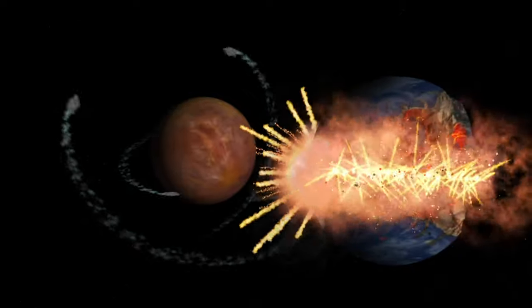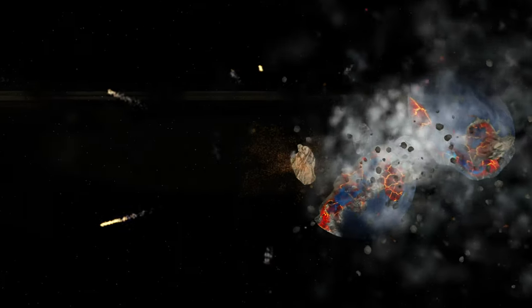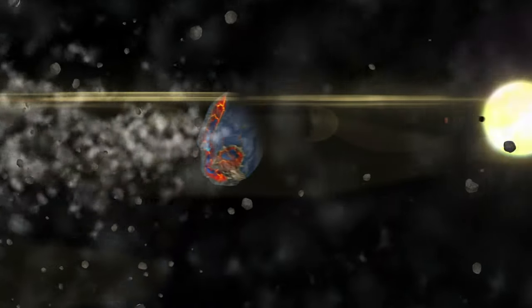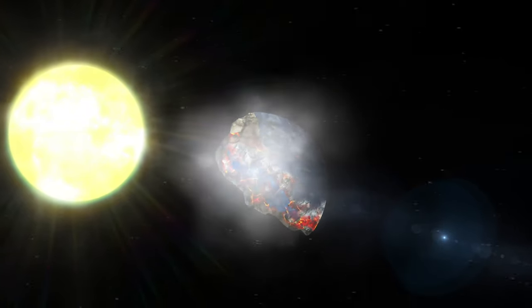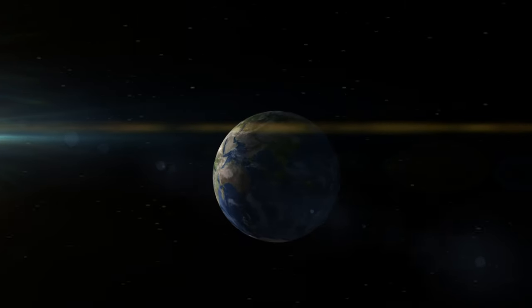Then thousands of years pass and eventually Marduk once again smashes into Tiamat, tearing her in two again. And this time, one large chunk makes its way into the position where it is today. A bunch more time passes and boom shakalaka, this chunk eventually becomes the earth.